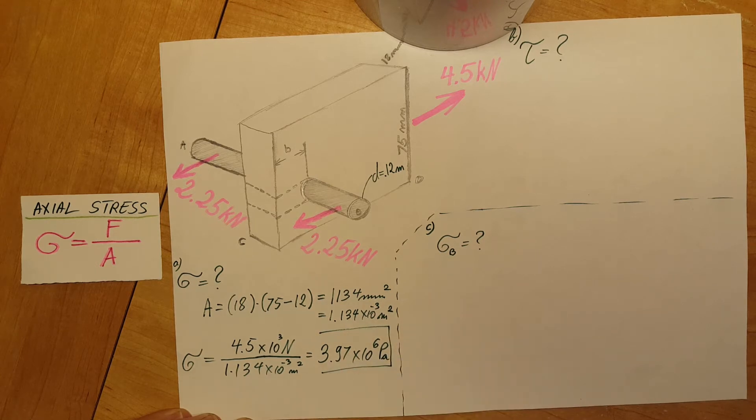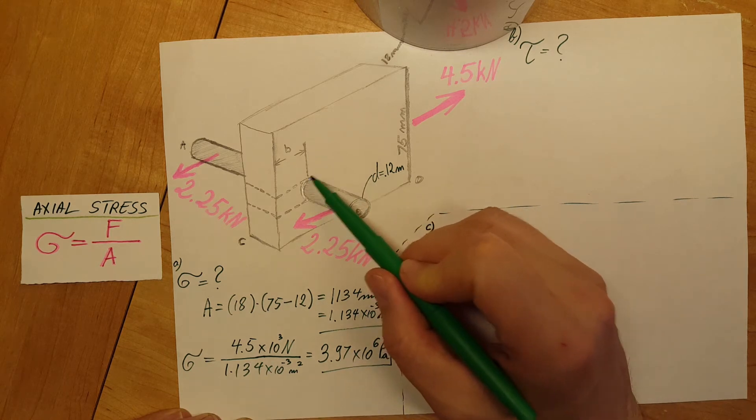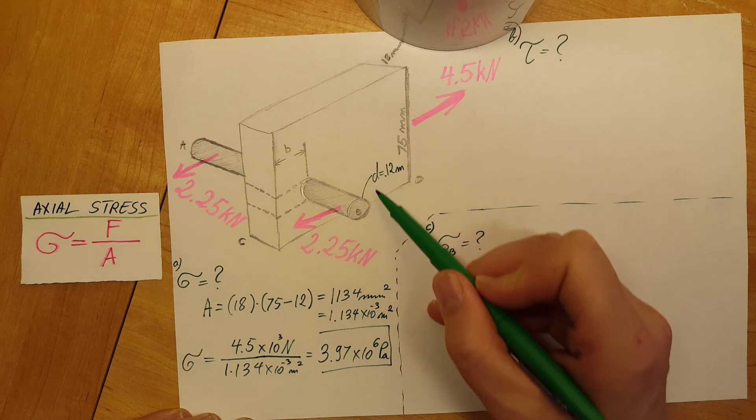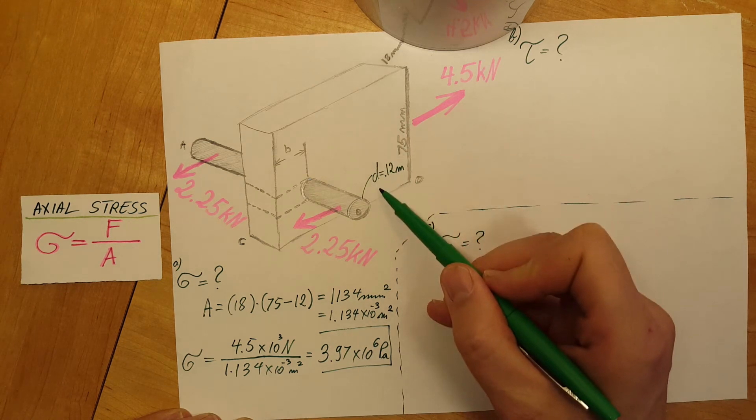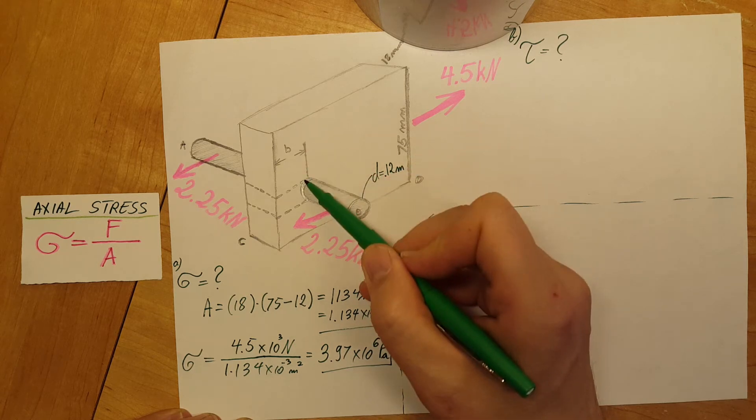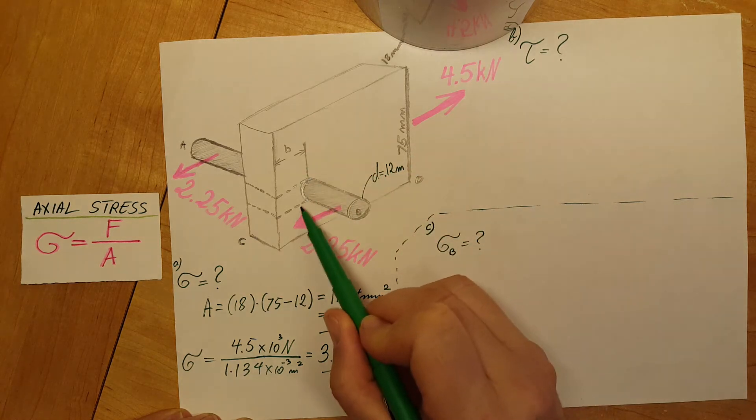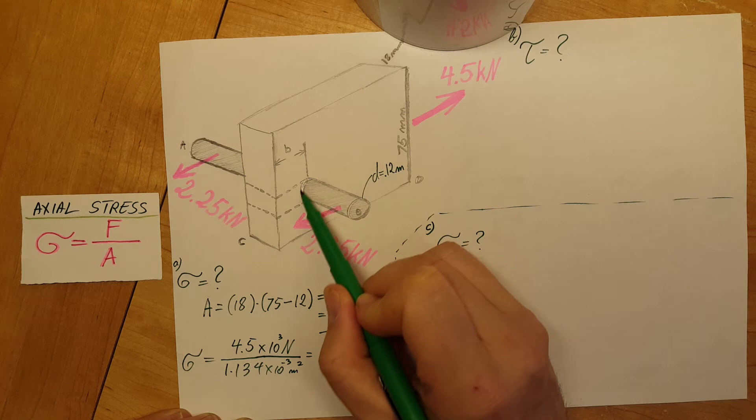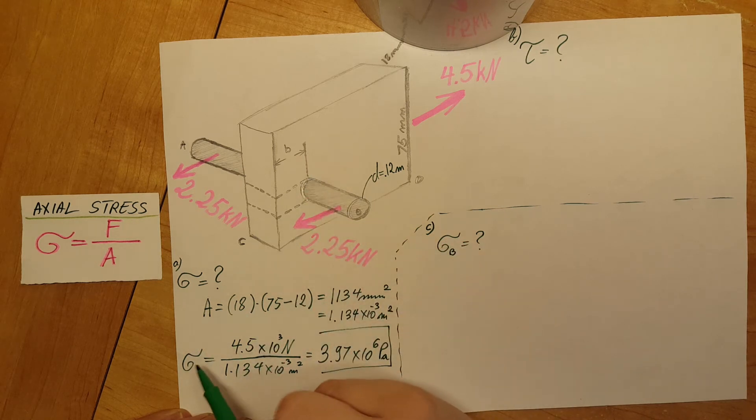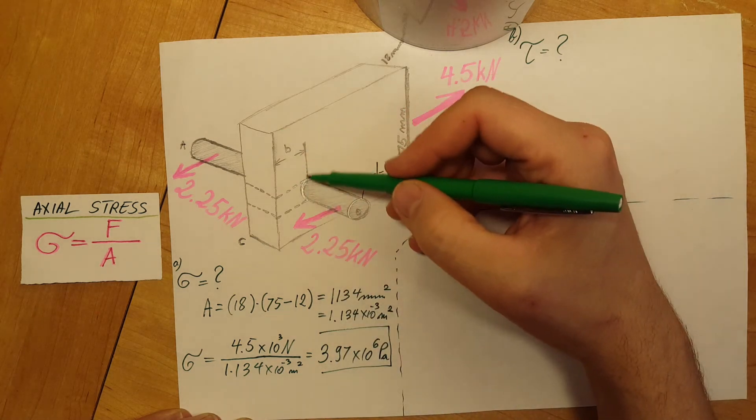The trick in this part was that we need to realize that the cross sectional area we're going to be working with is not the whole cross section of the wood, but the cross section where the steel rod goes through it. Therefore the stress will be most likely to cause it to fail here where it's the thinnest.